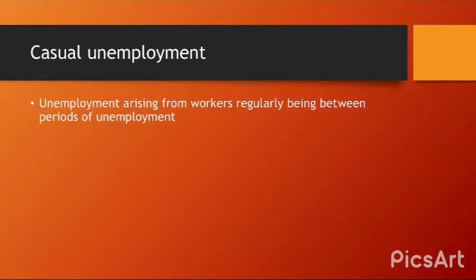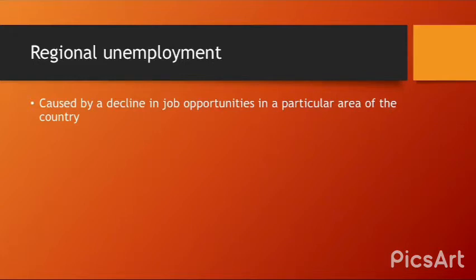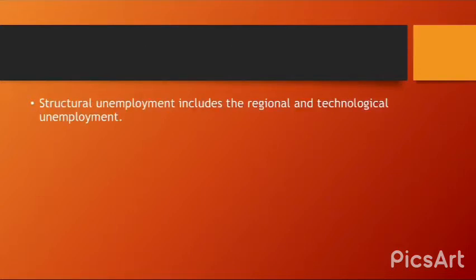Casual unemployment arises from workers who are regularly between periods of employment. Seasonal unemployment is caused by a fall in demand for particular times of the year — for example, raincoats are not needed all year round. Regional unemployment is caused by a decline in job opportunities in a particular area. Technological unemployment is caused by workers being replaced by capital equipment, as firms increase automation to improve efficiency and become more capital intensive, leading to layoffs. Structural unemployment includes both regional and technological unemployment.